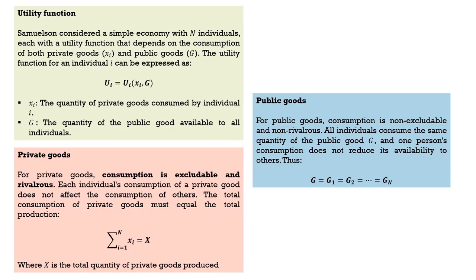The utility function of an individual can be expressed as ui = f(xi, G), where ui is the utility derived by individual i, xi is the quantity of all private goods consumed by individual i, and capital G is the quantity of public good available to all individuals. This is a simple utility function representing consumption of two bundles: private goods (xi) and public goods (G).